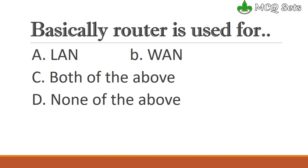LAN can do data transfer. The network interface card uses a MAC address for analysis, and network devices also use MAC addresses. MAC addresses can flow, and the IP node will work through the MAC address.